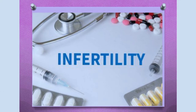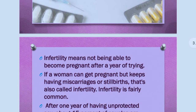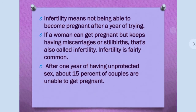A large number of couples all over the world, including India, are infertile — that is, they are unable to produce children in spite of unprotected sexual cohabitation. Infertility means not being able to become pregnant after a year of trying. If a woman can get pregnant but keeps having miscarriages or stillbirths, that is also called infertility. After one year of unprotected sex, about 15% of couples are unable to get pregnant.